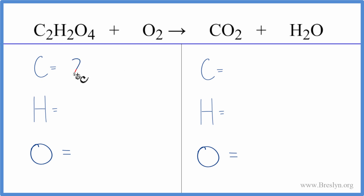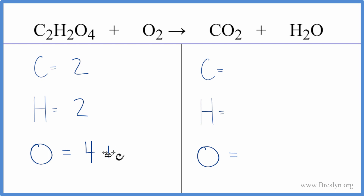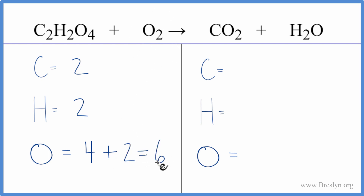We have two carbons, two hydrogens, and four oxygens. But don't forget these two oxygens here — we need to count those as well. That gives us six total oxygens on the reactant side of the equation.